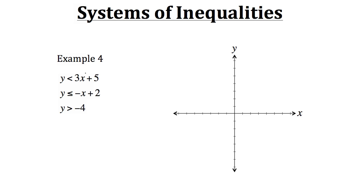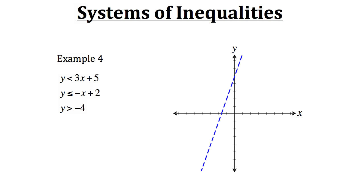We're going to graph all of them on the same coordinate plane. Starting with the first inequality, y is less than 3x plus 5 — we'll graph it as if it were y equals 3x plus 5. It's going to be a dotted line because the line itself is not part of the solution, as indicated by the inequality having no equal sign. Since y is less than 3x plus 5, we shade the region below the line.